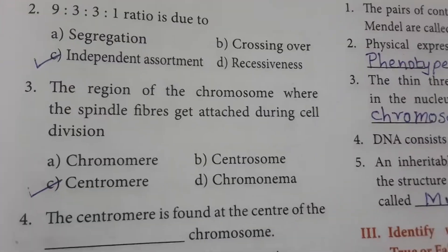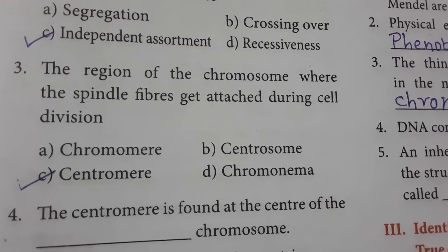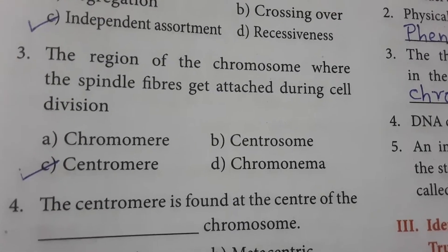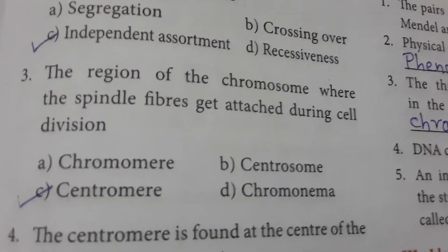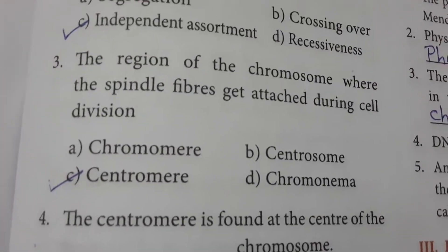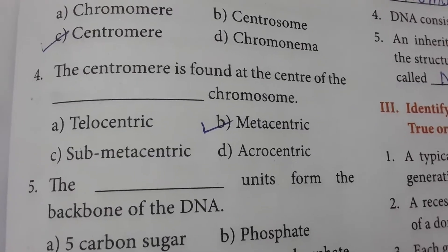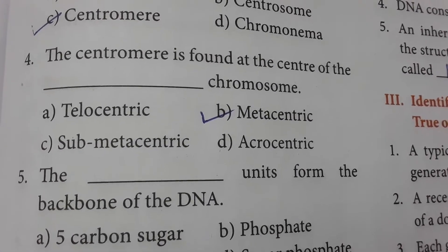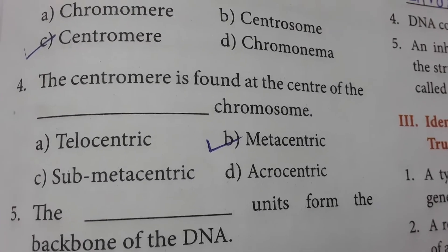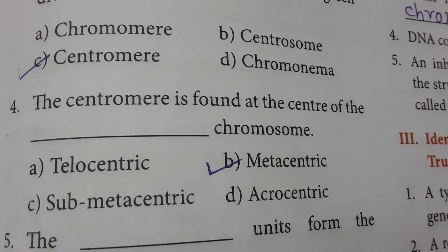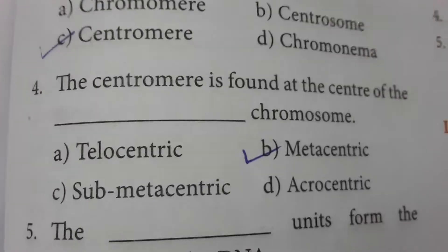The region of the chromosome where the spindle fibers get attached during cell division is the centromere. The centromere is found at the center of the metacentric chromosome. In a metacentric chromosome, the centromere is at the center; acrocentric and telocentric have it to one side; and submetacentric has it next to the center.